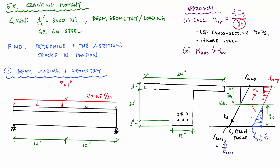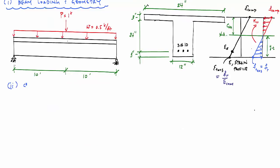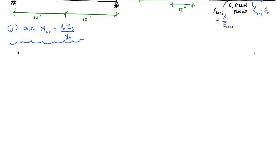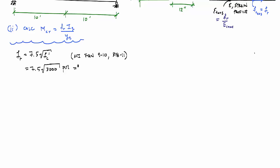We apply the cracking moment formula — ACI Equation 9-9 from ACI 318-11, which can also be derived from mechanics of materials. The modulus of rupture is fr = 7.5√f'c (ACI Equation 9-10 for normal weight concrete). All empirical formulas involving the square root of f'c require f'c in psi and output results in psi. Substituting f'c = 3000 psi gives fr = 410.8 psi.